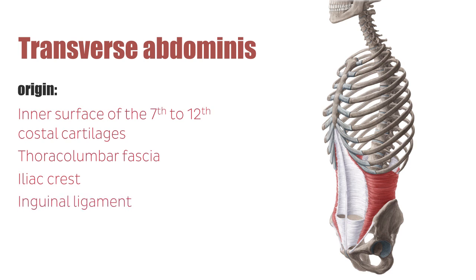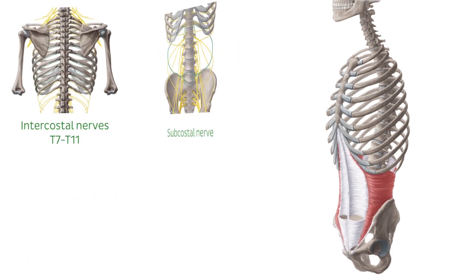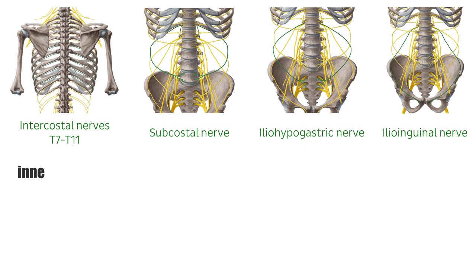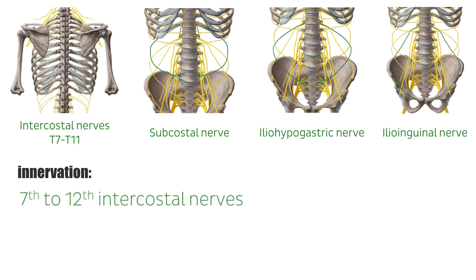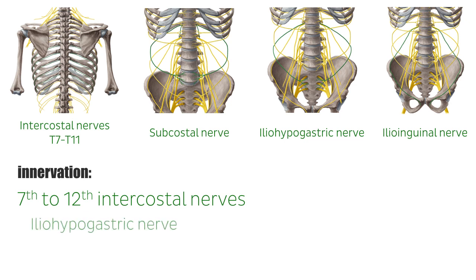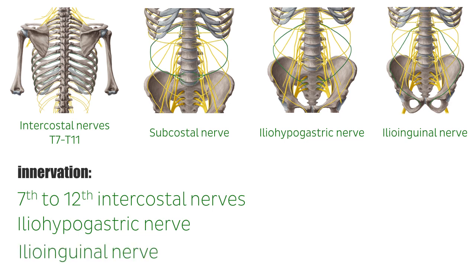It has its insertion on the linea alba. The innervation of the transverse abdominis is supplied by the 7th to 12th intercostal nerves, as well as the branches of the lumbar plexus, namely the iliohypogastric nerve and the ilioinguinal nerve.